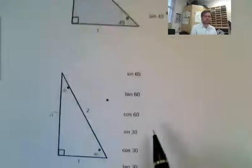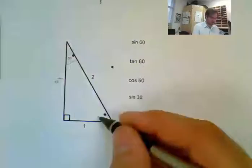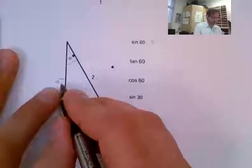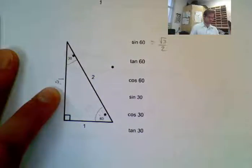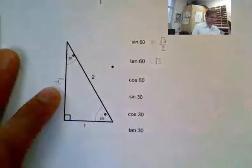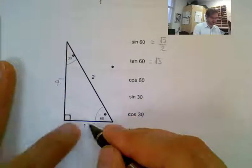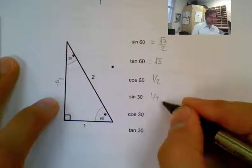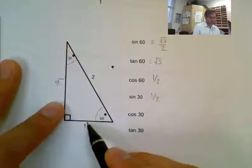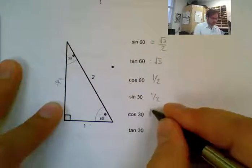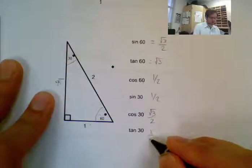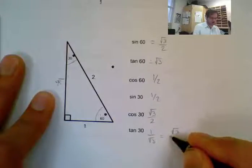Now for the second triangle with 30 and 60. Sin 60 is opposite over hypotenuse, which is √3 over 2. Tan 60 is opposite over adjacent, which is √3. Cos 60 is adjacent over hypotenuse, which is 1 over 2. Sin 30 is opposite over hypotenuse, which is 1 over 2. Cos 30 is adjacent over hypotenuse, which is √3 over 2. And tan 30 is opposite over adjacent, which is 1 over √3 — the same as √3 over 3.